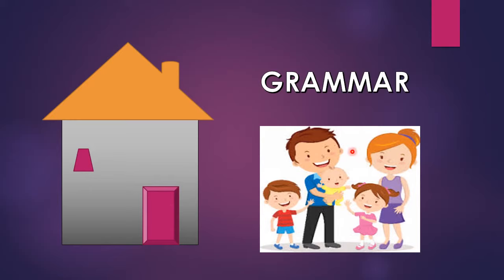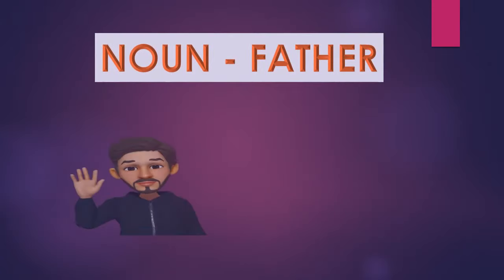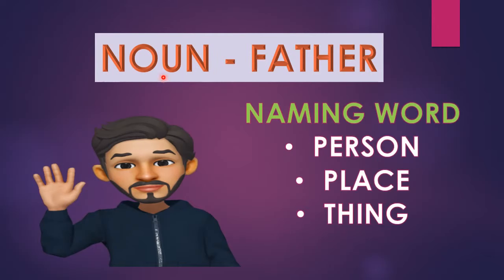Who will be the head of the family? Father and mother. Like that, in grammar, each and every sentence has 2 parts of speech — that is noun and verb. We will call them father and mother. So, here comes our father. He is the father of the family. His name is noun. Noun is a naming word. It can be the name of a person, place, thing, animal, bird, fruits, vegetables — anything. It can be the name of anything.